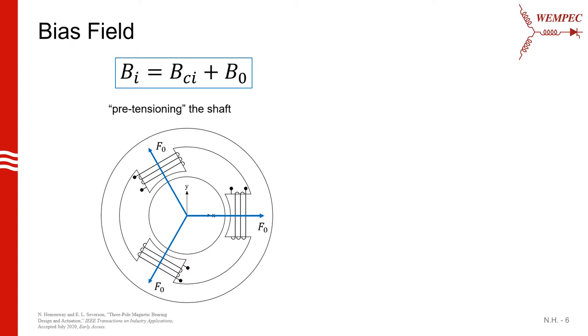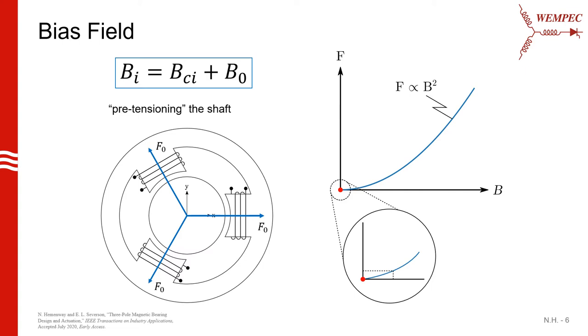One thing that's common to do in magnetic bearings is to add a bias field to them such that the total field in front of any tooth is the sum of a control component plus a DC offset. And you can kind of think of this as pre-tensioning the shaft or rotor. The reason we do this is because of the quadratic nature of the force field relationship. What you can see is that if we're sitting at a point of very little field, you have to change the field a lot to produce a very small change in the force output.